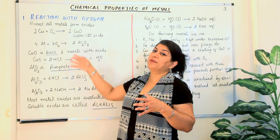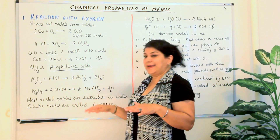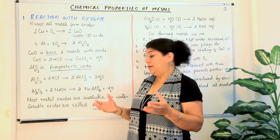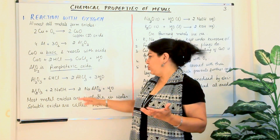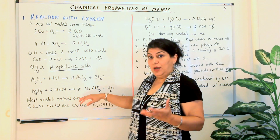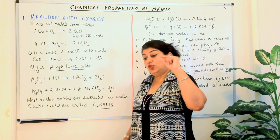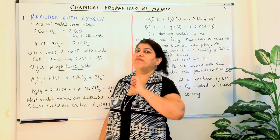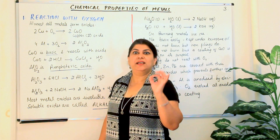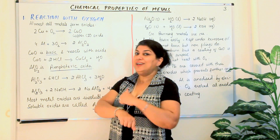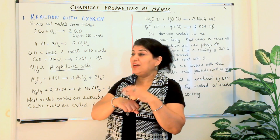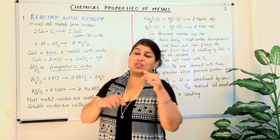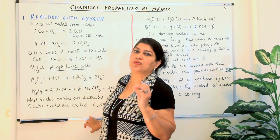Most metal oxides are insoluble in water. But if you dissolve them in water, they form bases called alkalis. Most metallic oxides are basic in nature, but only some are soluble in water. Those metallic oxides which are soluble in water form alkalis, and alkalis are very strong, highly corrosive bases. If you burn your skin with an acid it burns, but with a base it can go right to your bones — that is how corrosive alkalis are.